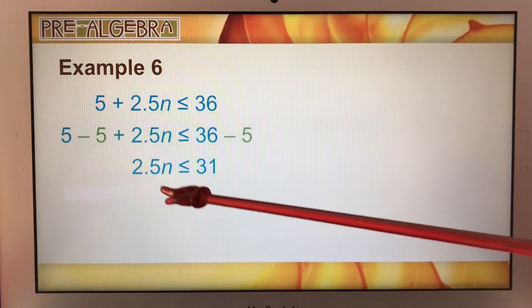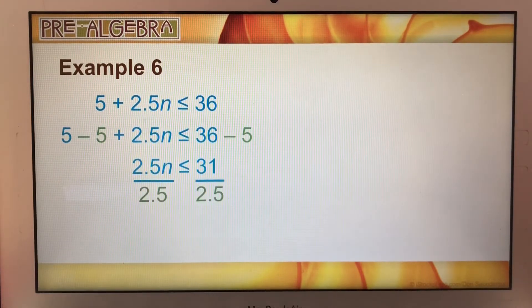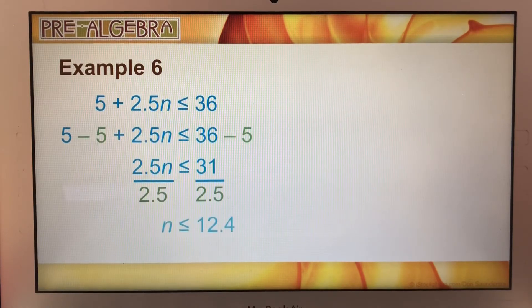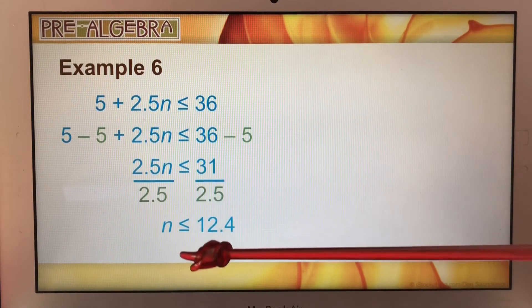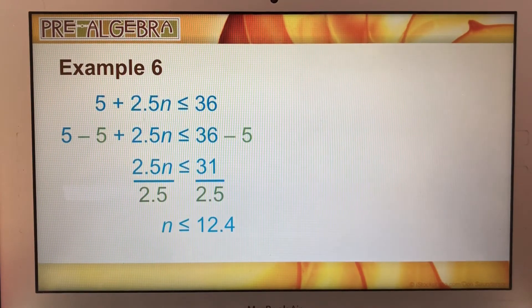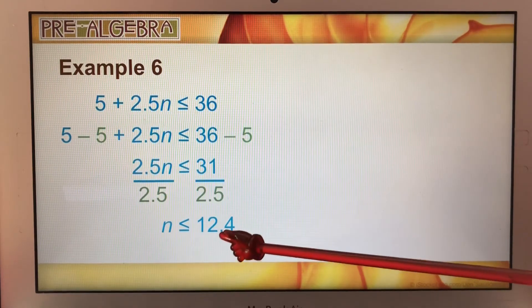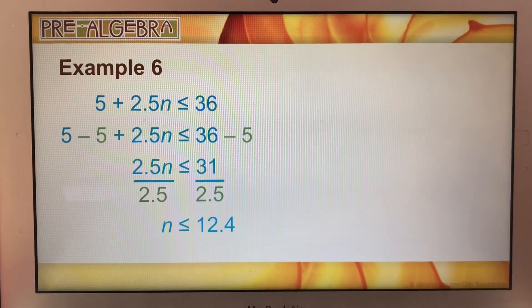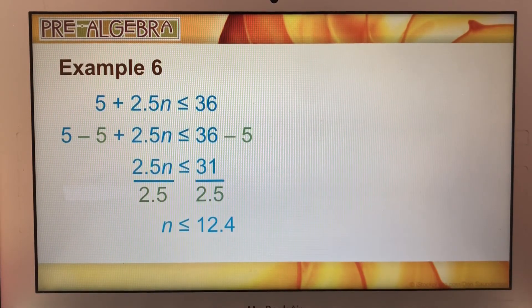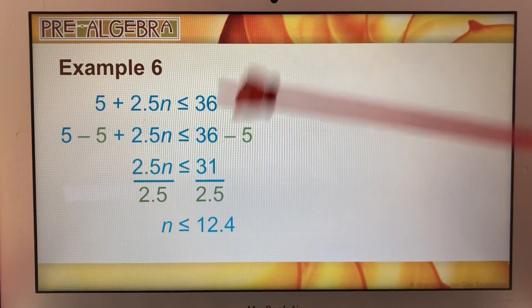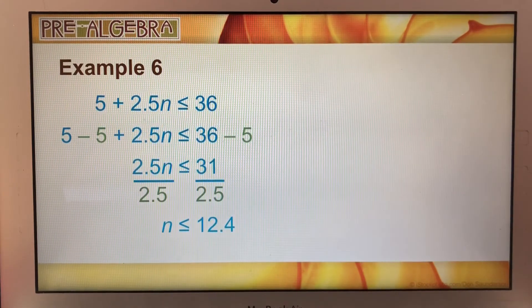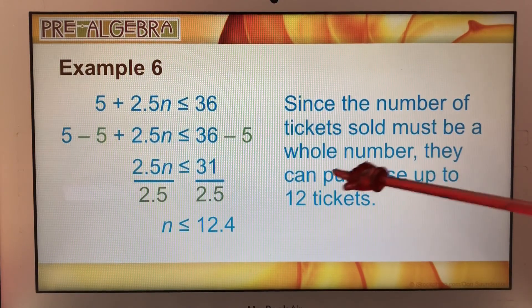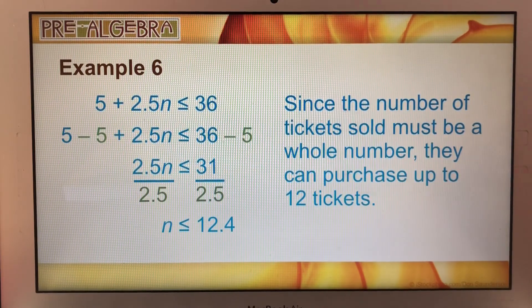So now we can solve for n. We can divide by 2.5. n is going to be less than or equal to 12.4. Now we can't buy 0.4 tickets. There's no decimal tickets or fraction of a ticket. So it's got to be less than or equal to 12.4. Since the number of tickets sold must be a whole number, they can purchase up to 12 tickets.